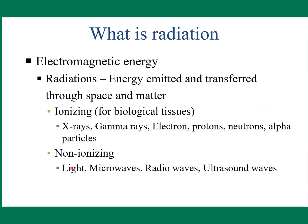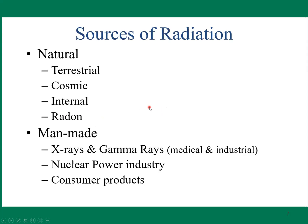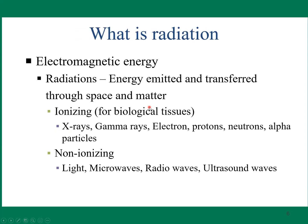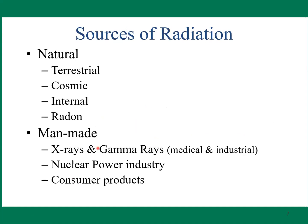Electromagnetic radiation is energy emitted and transferred through space and matter, and is ionizing for biological tissue. Ionizing types include X-rays, gamma rays, electrons, protons, neutrons, and alpha particles. Non-ionizing types include light, microwaves, radio waves, and ultrasound waves.